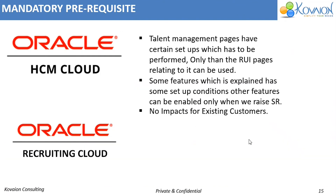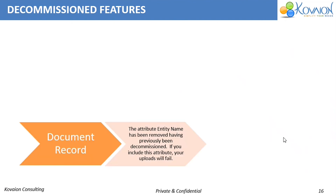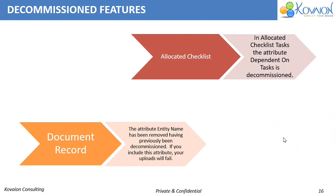There are some prerequisites to avail these features, which have been explained. For some features it is directly available; for some, we have to raise an SR. There are decommissioned features as well in 22A. Document records and allocate checklist had two fields which are now decommissioned, and if we try to fill those and complete the form, an error will be raised.